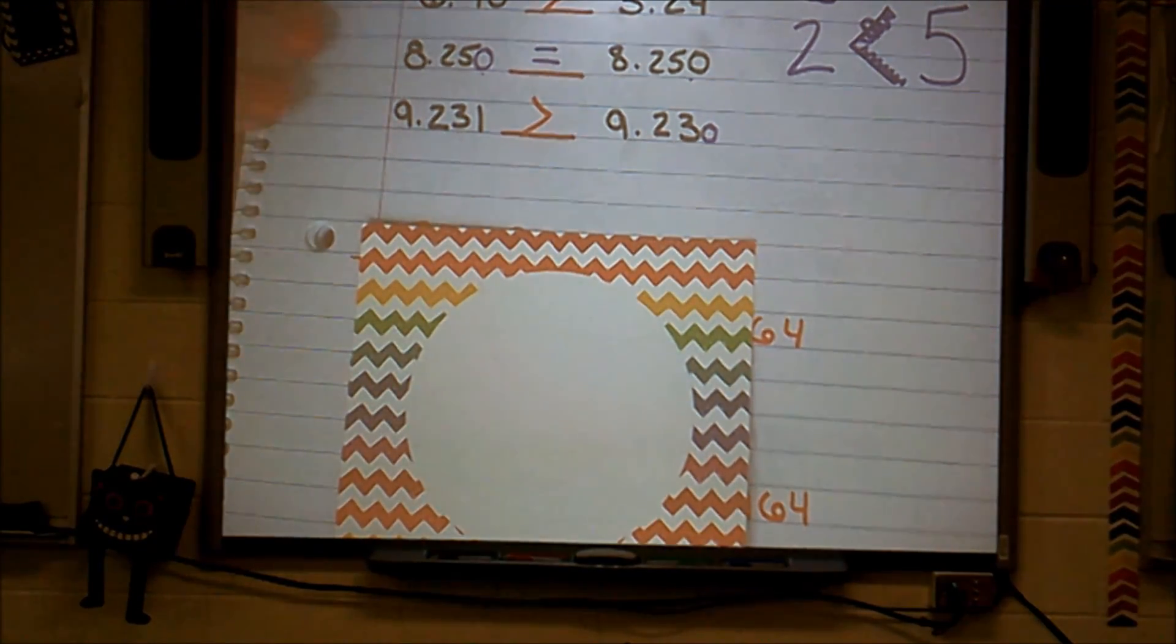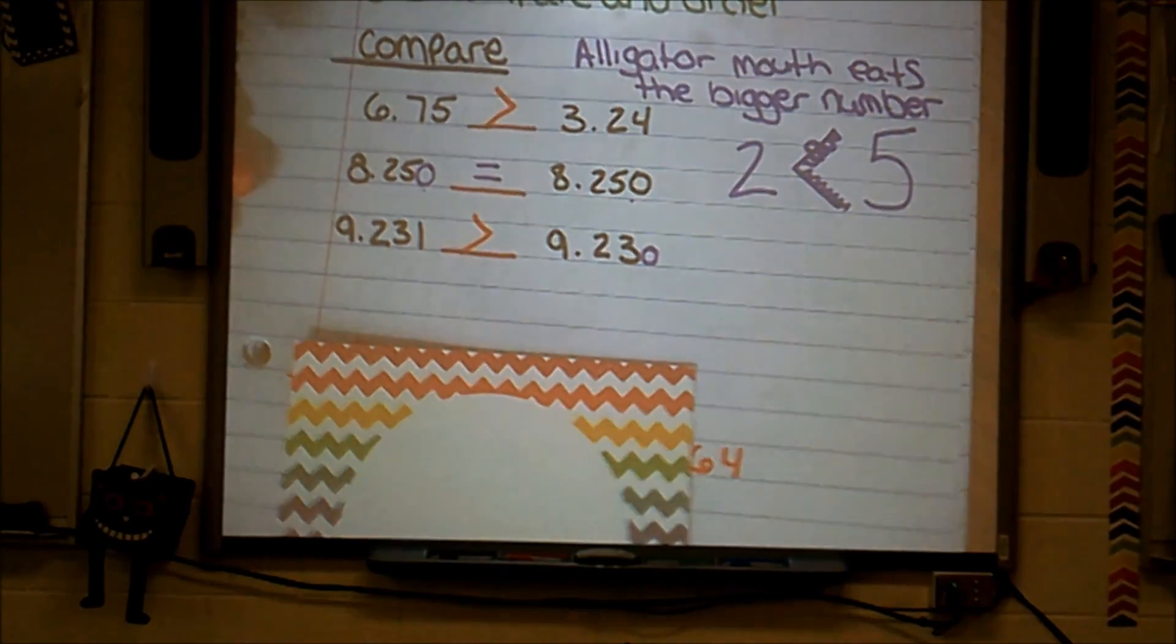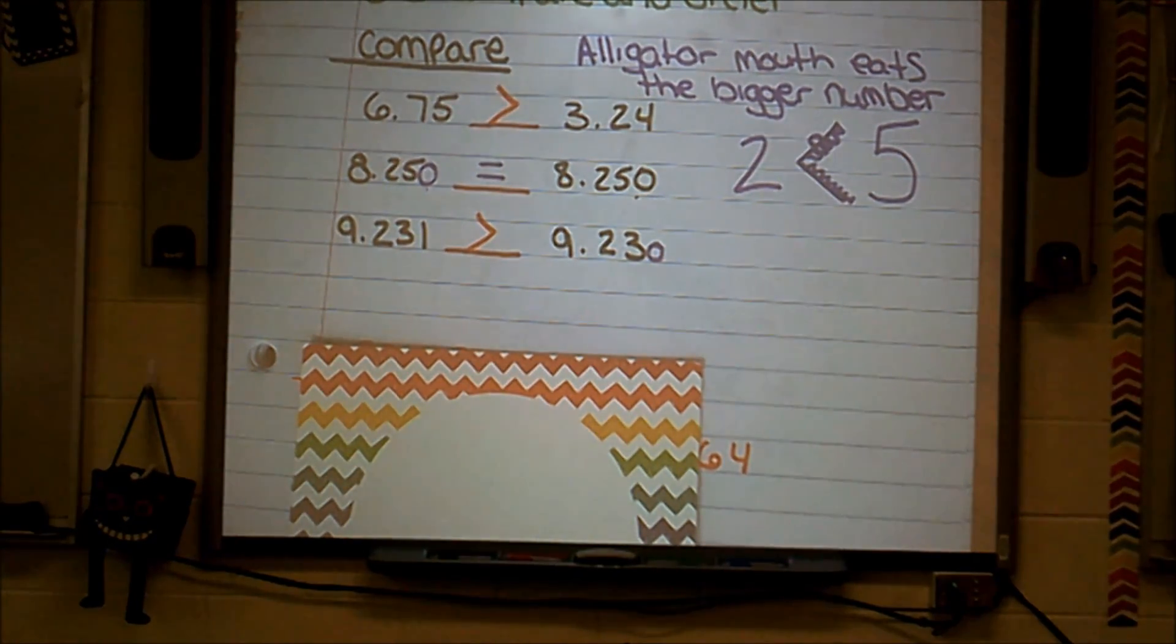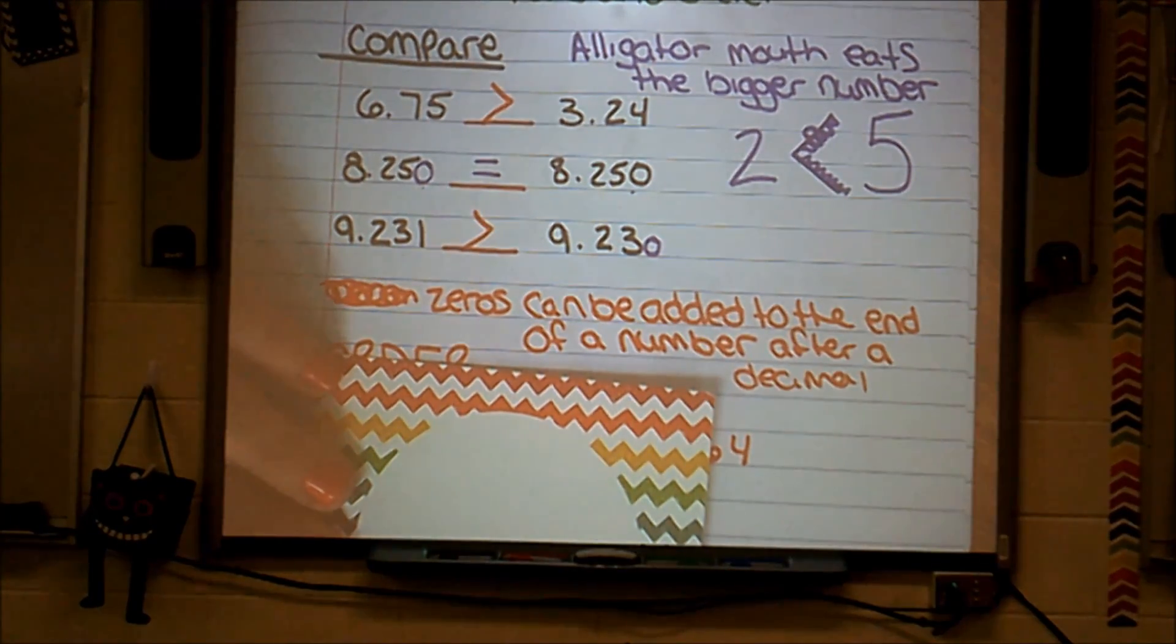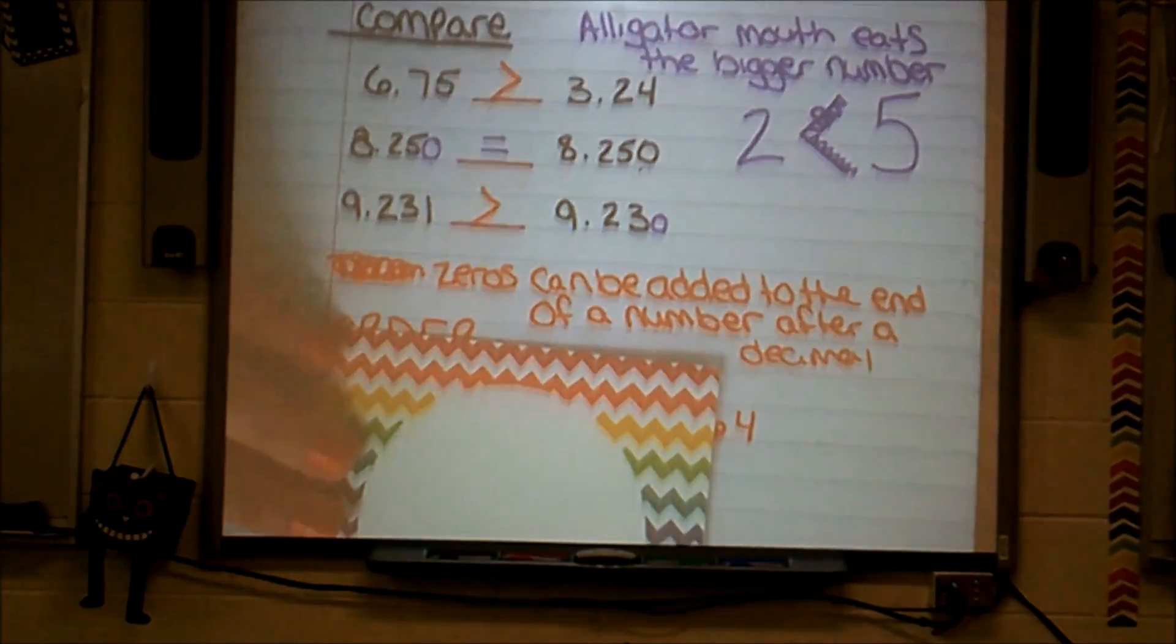So those are three examples on how to compare decimals. Think of them like money. And remember, zeros can be added to the end of a number after a decimal.